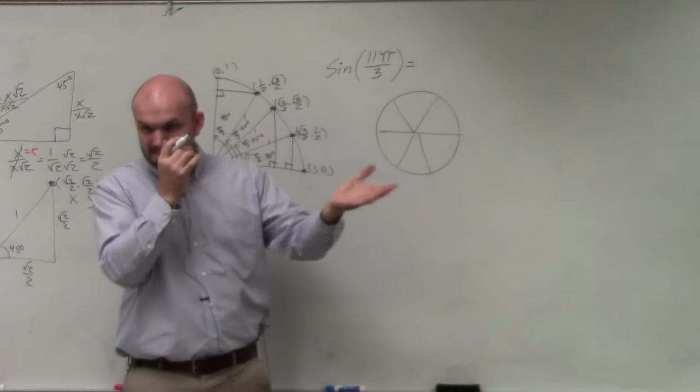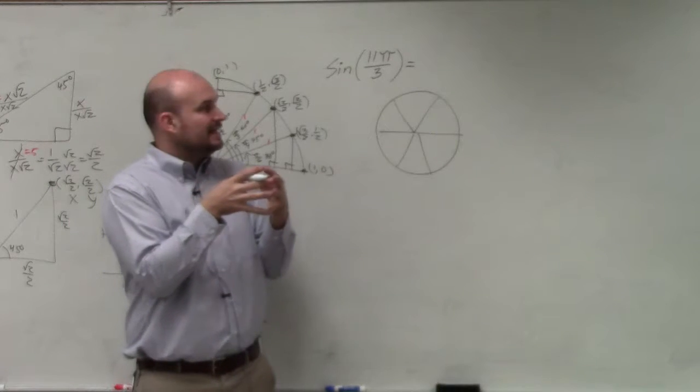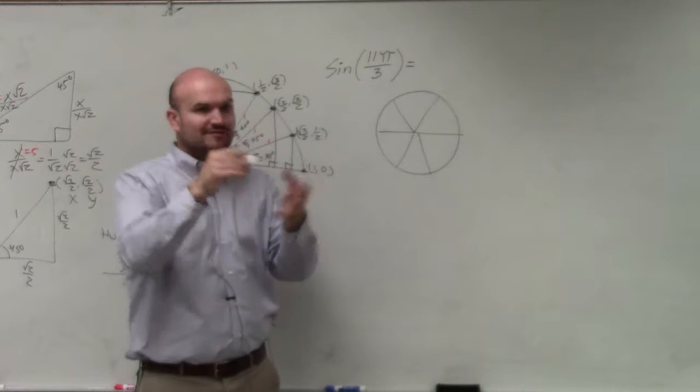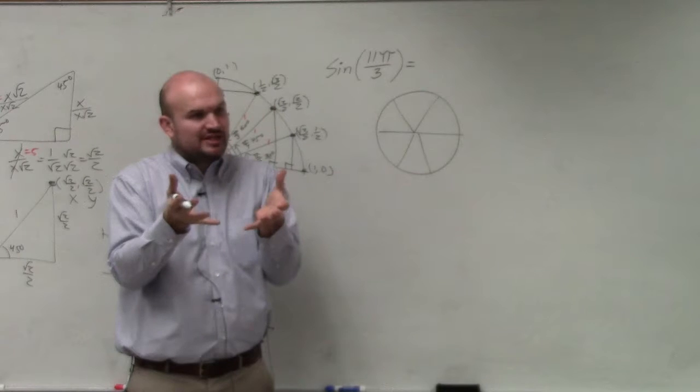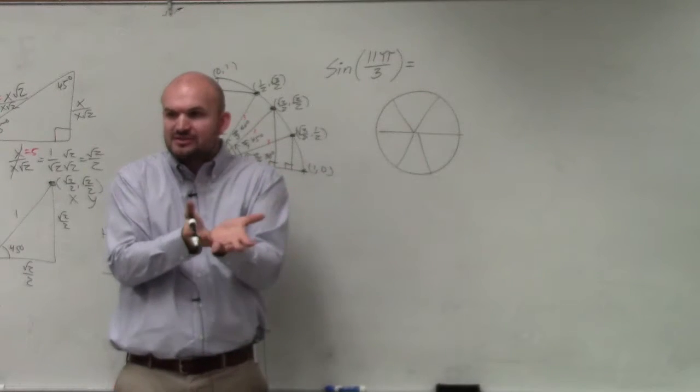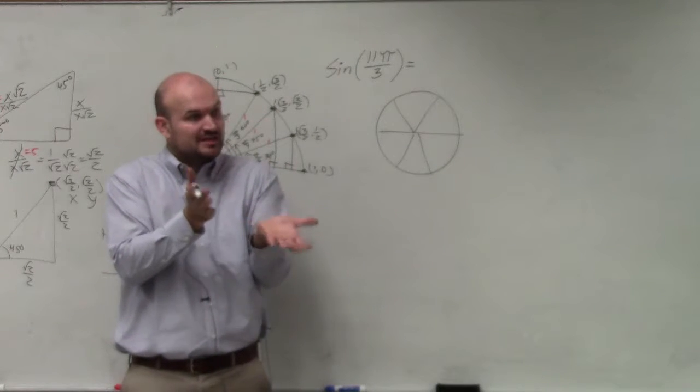But again, think of coterminal angles. If you can remove a revolution of a circle, it's not changing the terminal side of the angle, right? It's still going to have the same initial and terminal side.